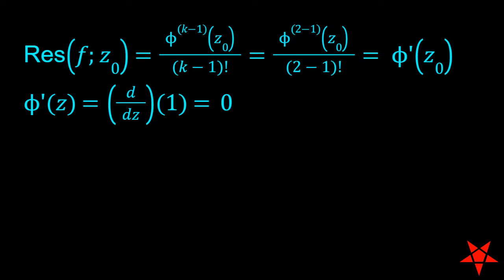Since phi of z is a constant, the first derivative is 0 for all values including z0 equals negative 1. Plugging phi prime of z0 back into the residue formula, we see that the residue of f of z at z equals negative 1 is 0.